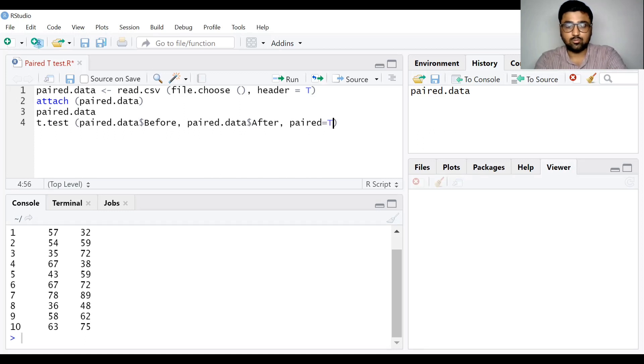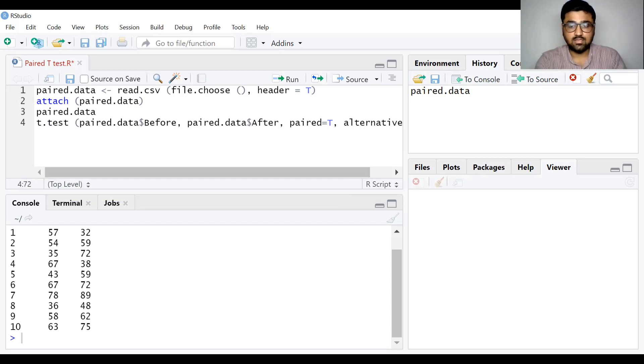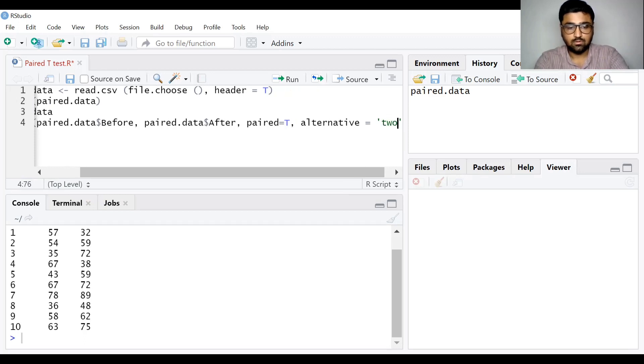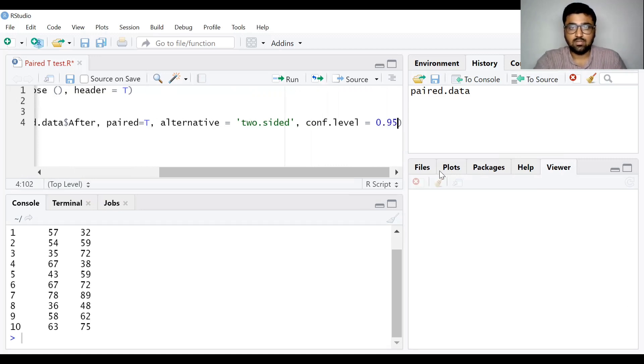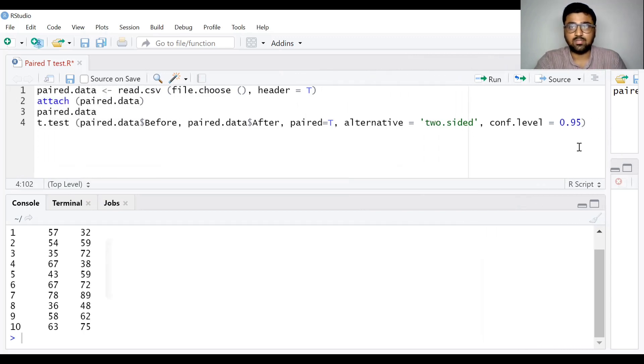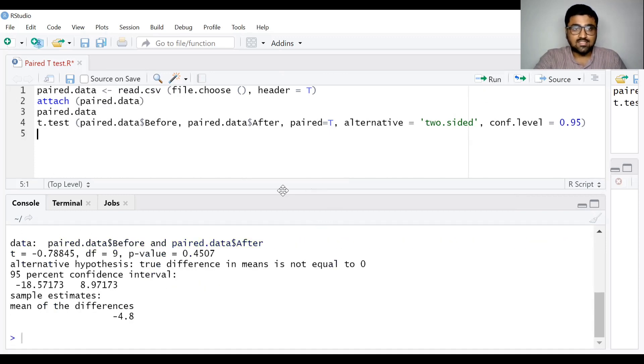Now, paired equals true. We are telling the R studio that we are interested to know the difference between paired samples. You can write alternative equals two-sided, confidence.level equals 0.95. You can see the entire script t.test first group before remedial classes marks, second group marks after remedial classes, paired equals true, alternative equals two-sided, confidence level equals 0.95. Simply click on run and you can see the result in console.